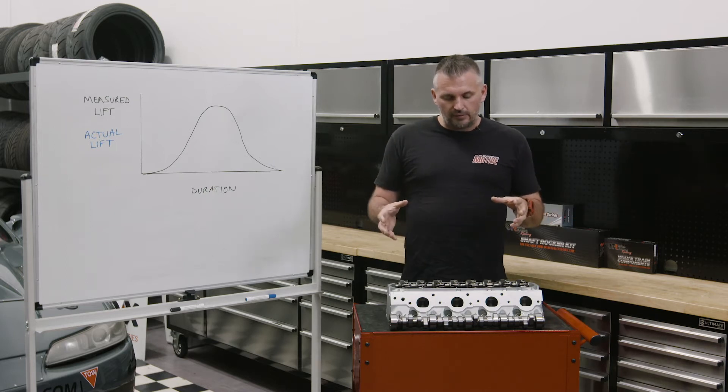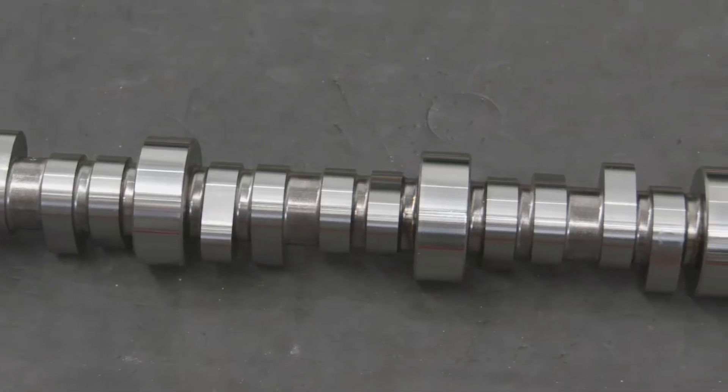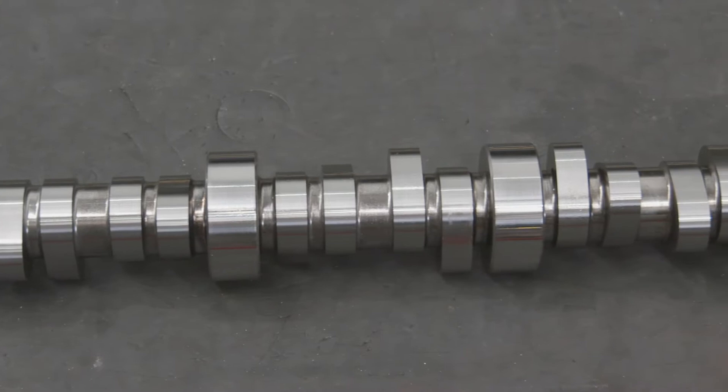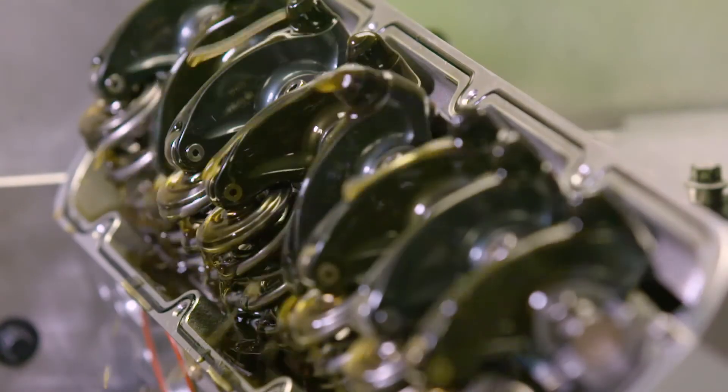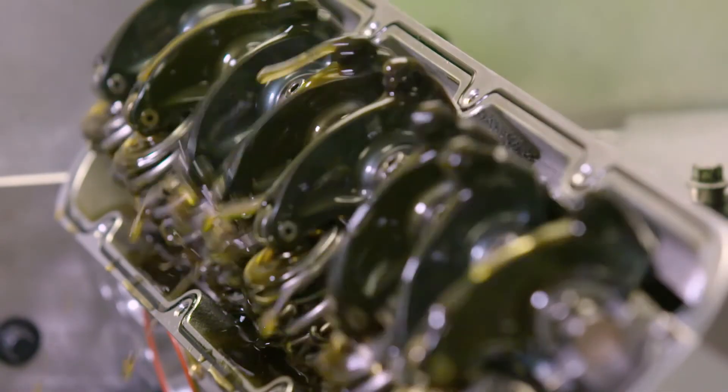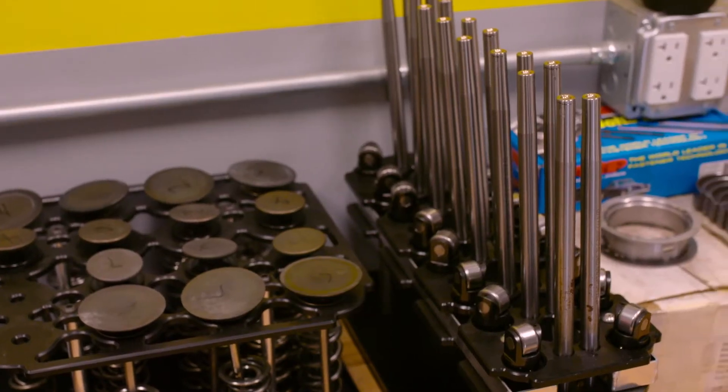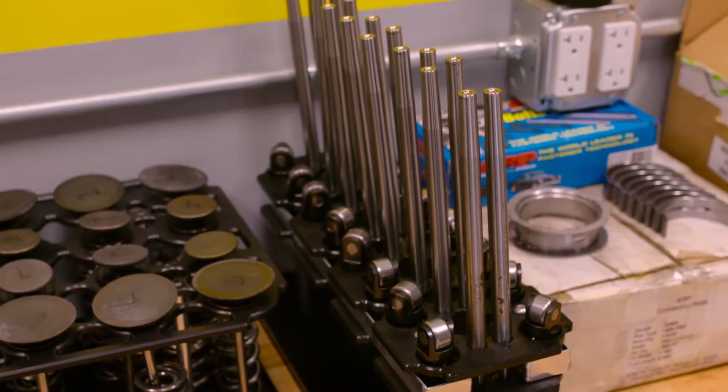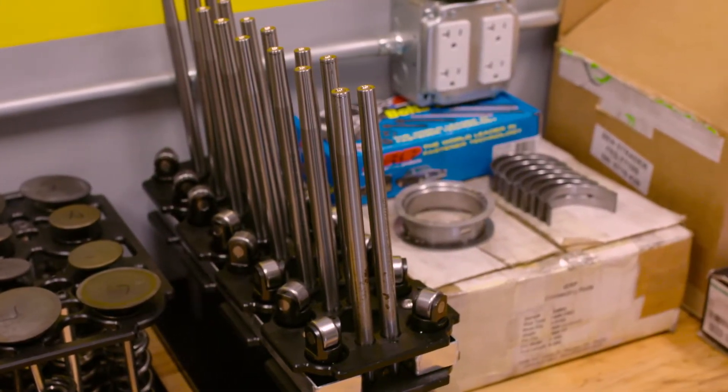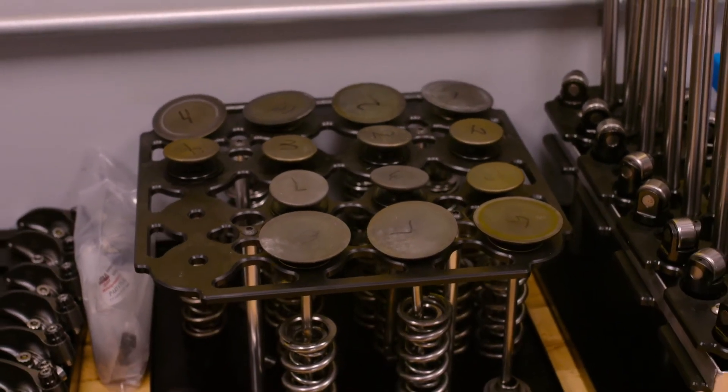The other big thing that happens when you start trying to make more power is upgrading your camshaft to have a more aggressive profile or more lift. Having stiffer valve springs puts heaps of strain on the other valvetrain components, which causes deflection. Essentially, the parts in between the camshaft and the valve bend or deflect, which means the actual lift that your valve gets is not as much as it should be based on the camshaft and the rocker ratio.